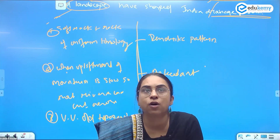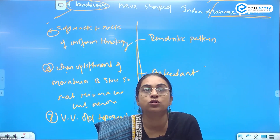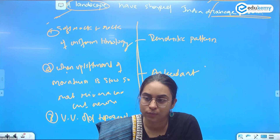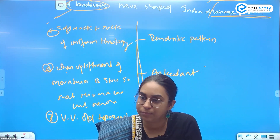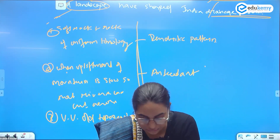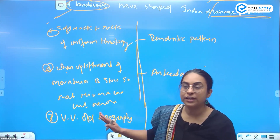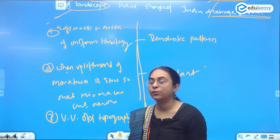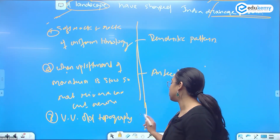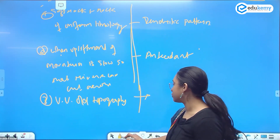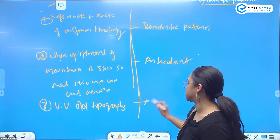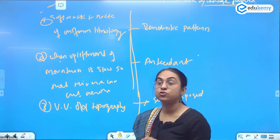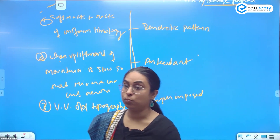The first point: soft rocks and rocks of uniform lithology give you dendritic pattern. Then if you have a very, very old topography — like the very old topography of the Peninsular Plateau — you will have superimposed drainage. Superimposed drainage does not follow the slope. What happens is you had a platform, that platform was eroded in a certain direction, and now the river follows its own original path rather than the current slope.